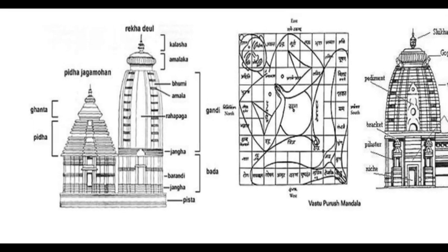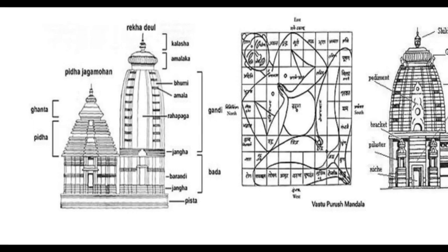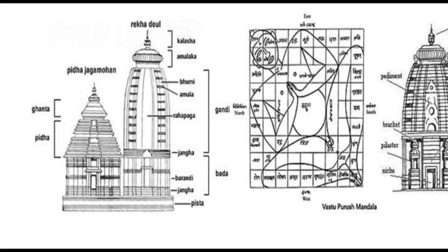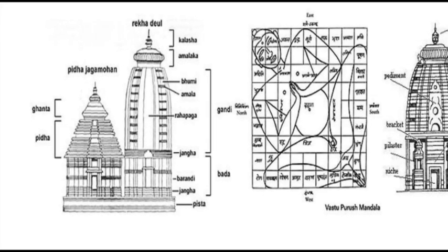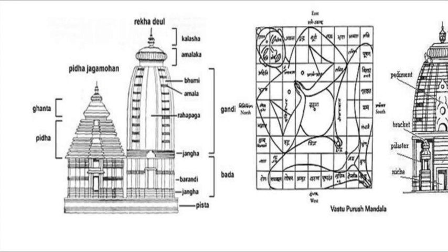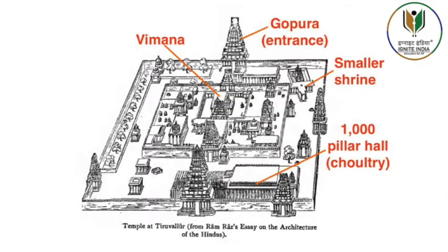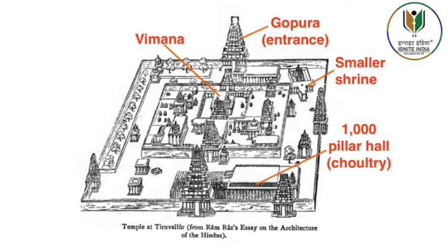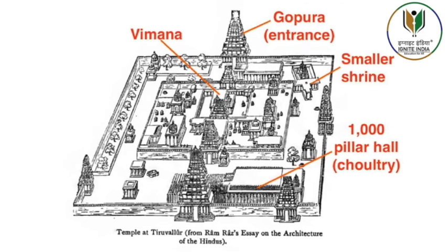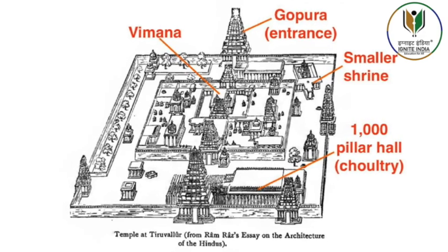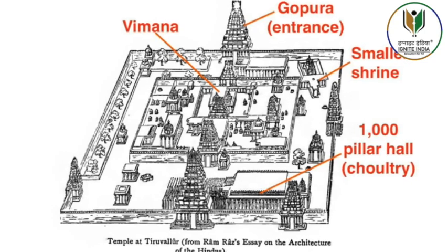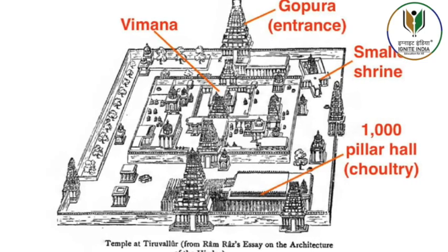The second major type of architectural form in the Nagara order is the phamsana, which tends to be broader and shorter than latina ones. Their roofs are composed of several slabs that gently rise to a single point over the center of the building, unlike the latina ones which look like sharply rising tall towers.